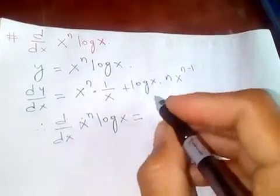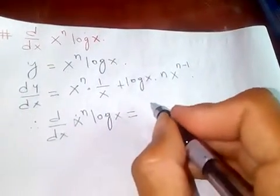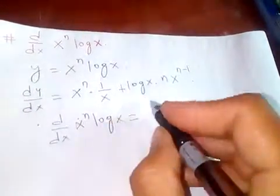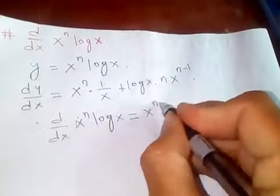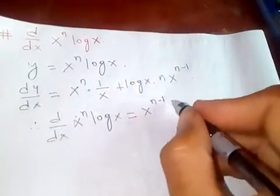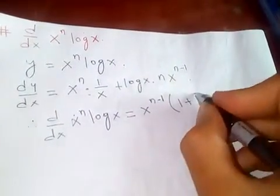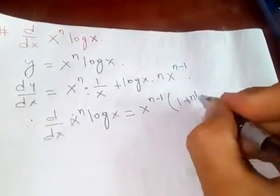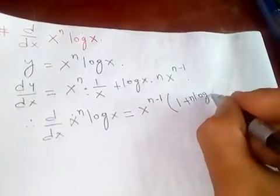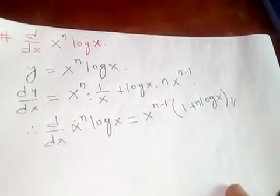I can factor out X to the n minus 1 as a common term, so we get X to the n minus 1 times 1 plus n log X. So this is the derivative.